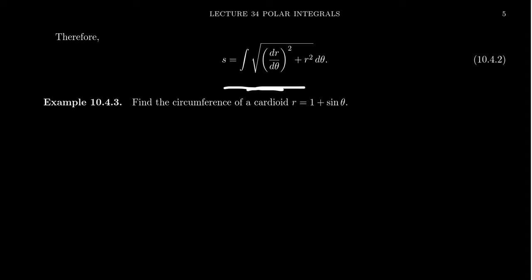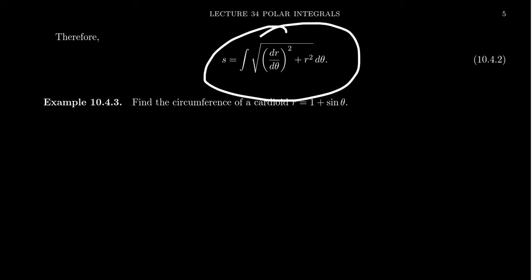The arc length of a polar curve is the integral of the square root of r prime squared plus r squared, d theta. This is a nice formula — we derived it using parametric equations, and it's probably worth memorizing or writing in a very convenient place.